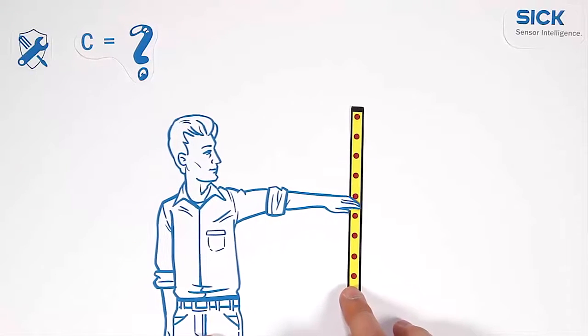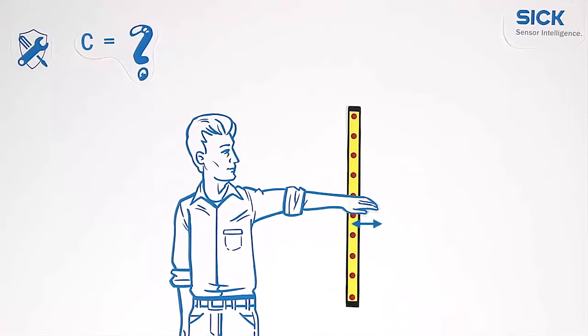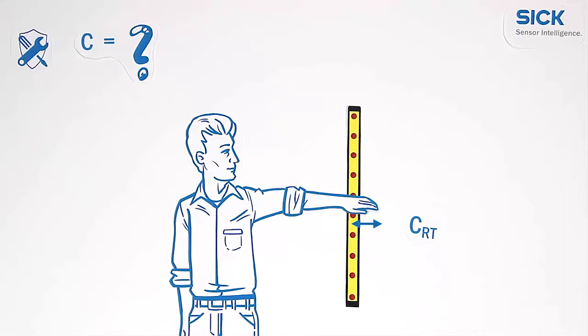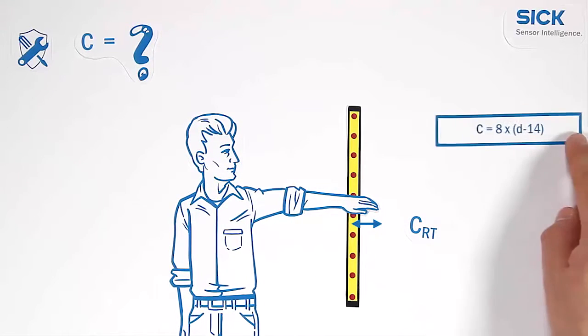Decisive is how far can the operator reach into the hazardous area without being detected. This depends on the selected resolution D, as shown in the formula.